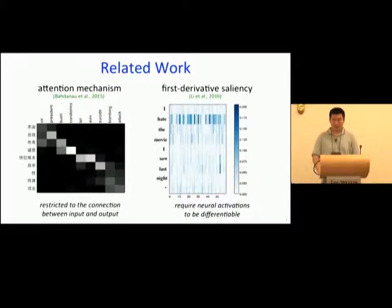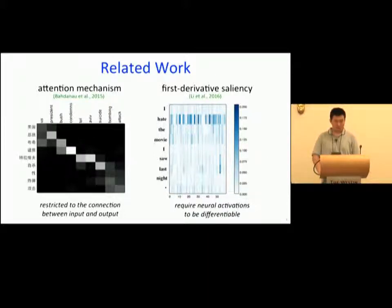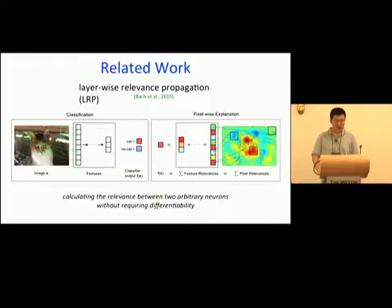The most widely used visualization tool is the attention weight matrix, but it is restricted to the connection between words in source and target languages. Another important work is the first derivative approach proposed by Li and others in 2016. They use derivatives to measure the importance of neurons. However, their approach requires neuron activations to be differentiable.